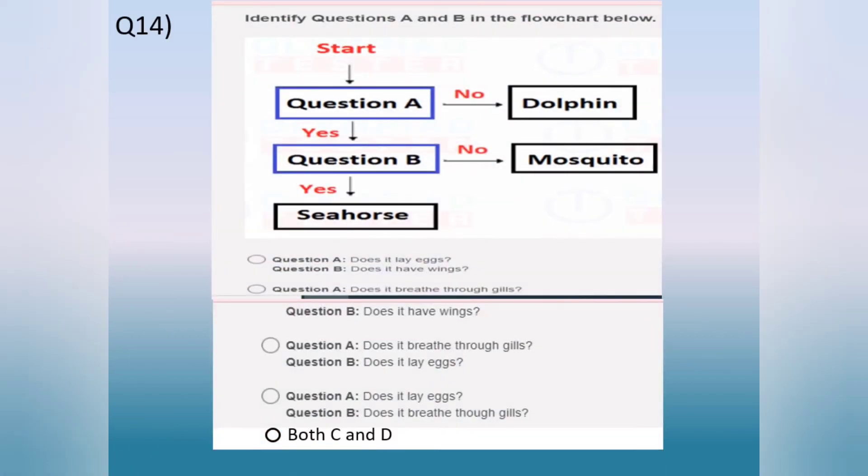Question 14. Identify questions A and B in the flowchart below. Option A. Question A does it lay eggs? Question B does it have wings? Option B. Question A does it breathe through gills? Question B does it have wings?